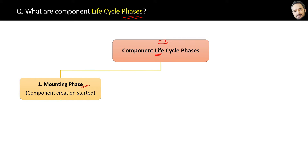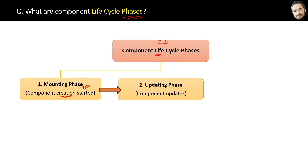The first is the mounting phase. In this phase, component creation is started and an instance of the component is created and inserted into the DOM. Therefore, only the component is first time visible to you or any user on the page. All the methods inside this phase will execute before the component is rendered in the DOM.